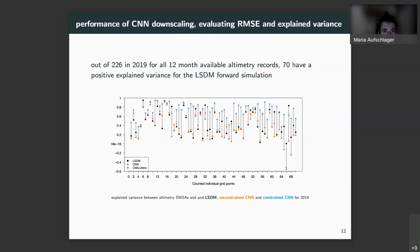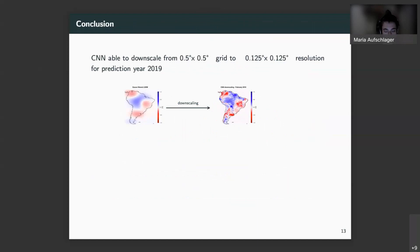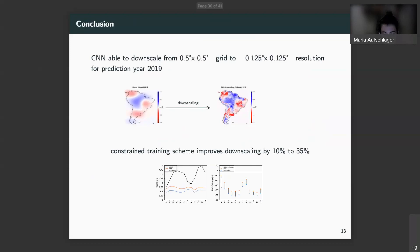These are already the main achievements and I would like to sum up what is important to take away. So the neural network with constraint training scheme is able to combine numeric hydrological models and local real world observations. Out of this performs an accurate downscaling from coarse gravity field observations. Even to a higher resolution than ever before to eighth degree grid resolution. The validation with independent altimetry records has shown that the constraint training scheme improves downscaling by 10% and even up to 35%.